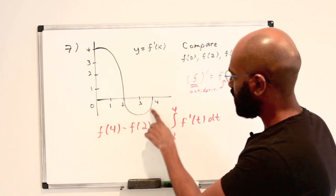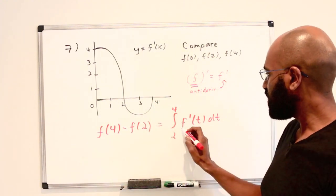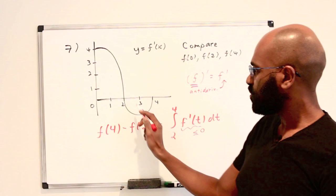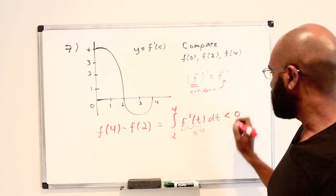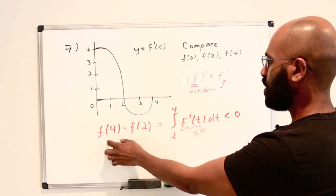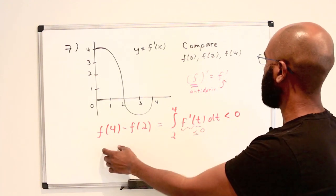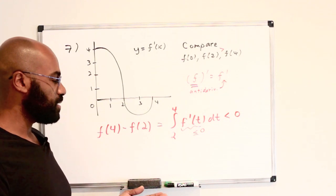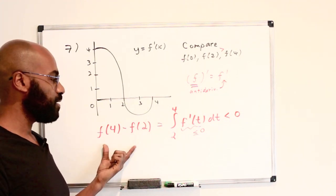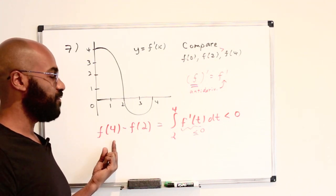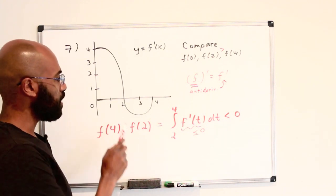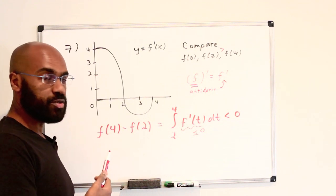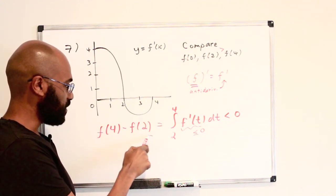Looking at the graph of f prime between 2 and 4, it is completely negative, so this integral is strictly less than zero — the area under the curve there is all negative. As a consequence, f(4) minus f(2) is negative, meaning f(2) is strictly greater than f(4). You might notice we didn't strictly need the fundamental theorem here; we could have simply observed that f prime is negative on [2, 4], so f is a decreasing function and the inequality follows directly.